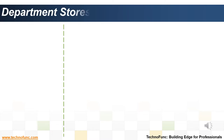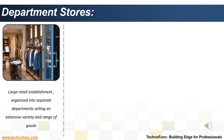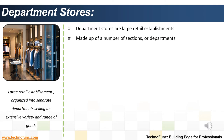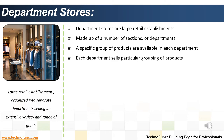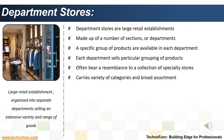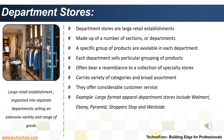Department stores are large retail establishments made up of a number of sections or departments, each specializing in selling a particular grouping of products. For example, consumers go to one area to purchase tableware and another to acquire bedding. These are very large stores offering a huge assortment of soft and hard goods. A department store usually sells a general line of apparel, household linens, home furnishings, and appliances. Examples include Pantaloon, Ebony, Pyramid, Shoppers Stop, and Westside.